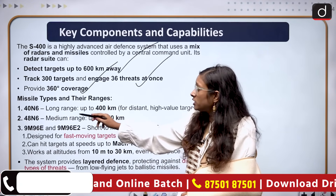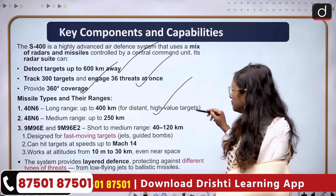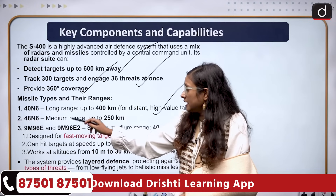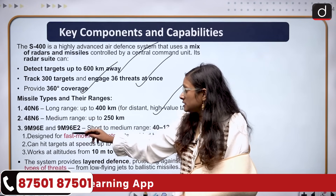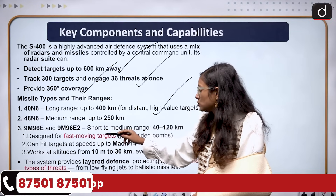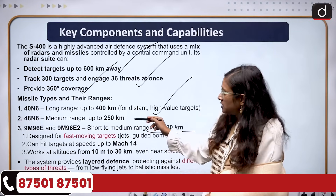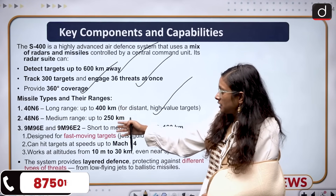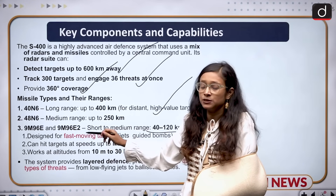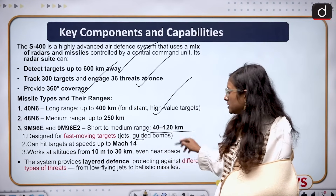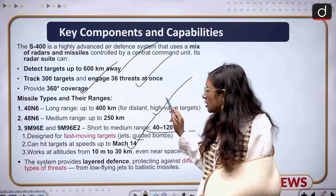Regarding missile types and their ranges: the 40N6 is long range, up to 400 kilometers, for distant high-value targets. The 48N6 is medium range, up to 250 kilometers. The 9M96E and 9M96E2 are short to medium range, covering 40 to 120 kilometers. It is designed to engage fast-moving targets, jets, and guided bombs, and can hit targets up to Mach 14.